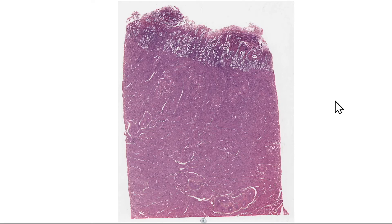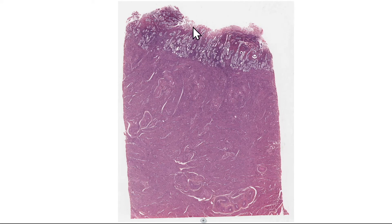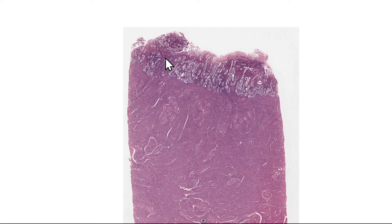That then causes ischemia to the surface tissue within the functional layer, and that tissue breaks down and eventually sheds and is released during menstruation. So what we're seeing here is the endometrium, and this is the myometrium — we're really focusing on the structure of the endometrium here.